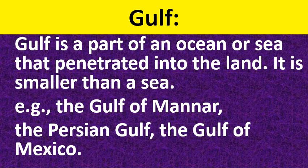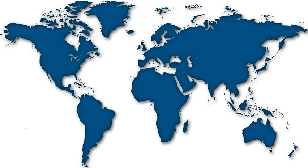Now let us know about gulf. A gulf is a part of an ocean or sea that has penetrated deep into the land. If you see India's map, you can find the Gulf of Kutch and Gulf of Khambhat, where water has penetrated deep inside the land. Other examples include the Gulf of Mannar in South India, the Persian Gulf, and the Gulf of Mexico. Gulf means a narrow stretch of water entered deep inside the land, and it is a part of a sea or ocean.